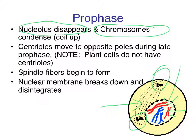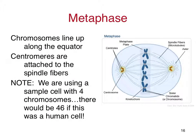From prophase we'll move into the next phase, which is metaphase. In metaphase, the chromosomes line up in the middle of the cell — what's called the equator, or sometimes referred to as the equatorial plate. The chromosomes line up on the spindle fibers, attached at the centromeres. This begins the preparation for the actual tearing apart.